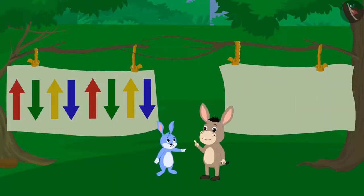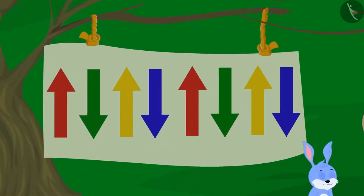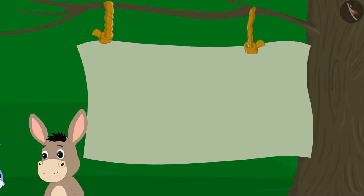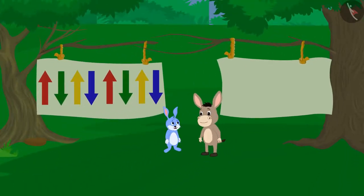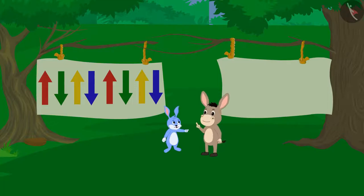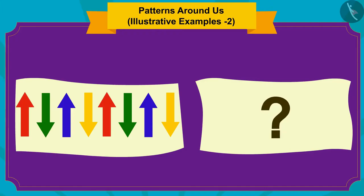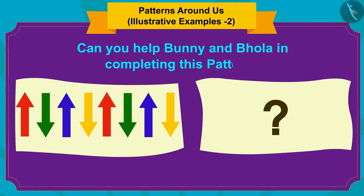Bhola and Banni thought that if they make that pattern on the other side of the curtain and then pull both the curtains closer, then they will be able to complete that incomplete pattern as well. Children, can you help Banni and Bhola in completing this pattern?